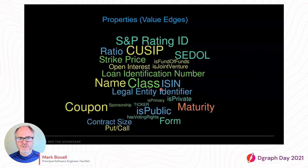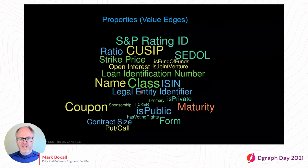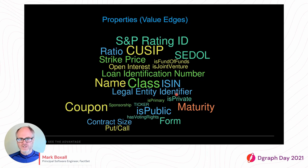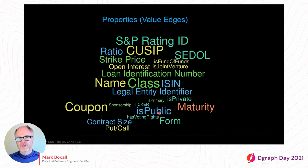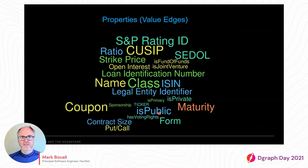Looking at the properties or value edges in DGraph — a lot of these are symbols and identifiers used to identify securities and companies. Things like CUSIP, SEDOL, ISIN, and Ticker are all very common security-level identifiers. Legal Entity Identifier is a company-level identifier. Typically our clients have access to these symbols and use them as a starting point to locate an object in the graph before starting any traversal. 'Is public' is a flag on company nodes that separates private companies from public companies — it's a point-in-time property, since a company might start out private, go public a few years later, and potentially revert back to being private.